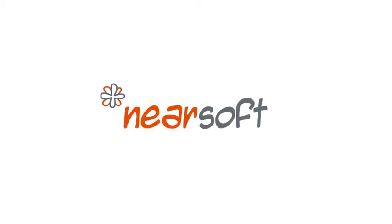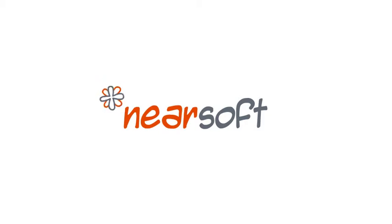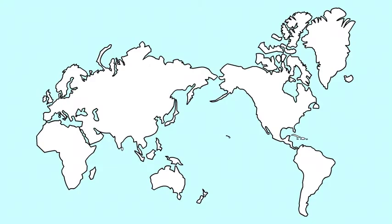This video is about outsourcing software development outside the US and how to select the best location for a business in California. In the beginning, life was simple and we had the USA, but then somebody went and renamed it 'onshore' even though it didn't move.